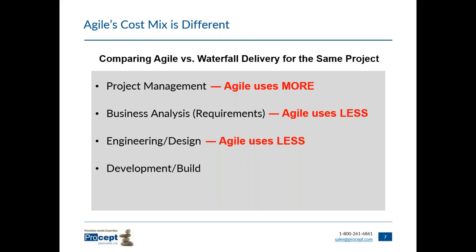For development, the cost of building the solution is about the same between approaches since you're building the same thing. However, there are efficiencies in investigating and resolving defects. In waterfall, testing near the end means finding the cause of a defect may require examining the entire solution. With agile, testing at the end of each iteration means the defect source is easier to identify, as only the most recent work needs to be examined. Defects found sooner also require far less rework than in waterfall.